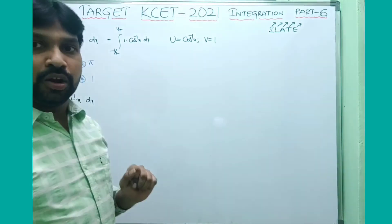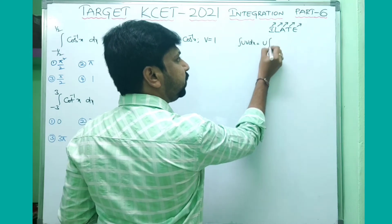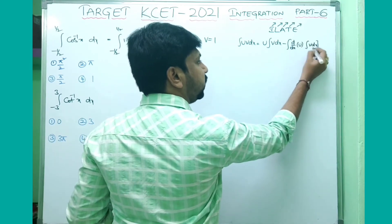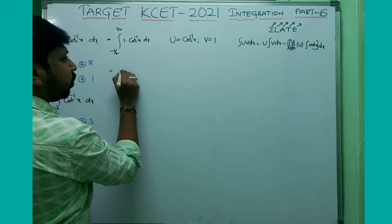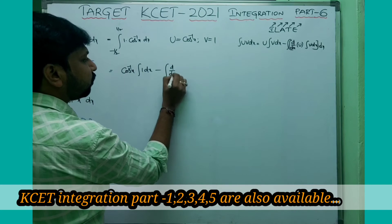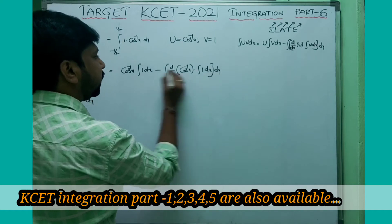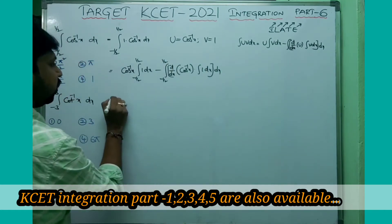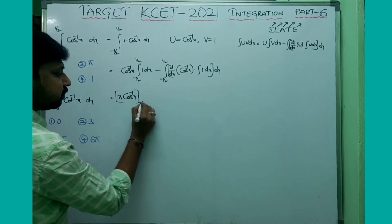Cos⁻¹x is the inverse function, so u = cos⁻¹x and v = 1 (the algebraic function). Now apply the formula: integral UV dx = u · (integral v dx) minus integral [derivative of u · (integral v dx)] dx. So this becomes cos⁻¹x · x, evaluated between limits minus 1/2 to 1/2.